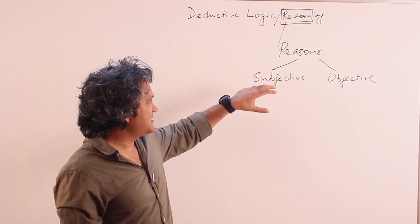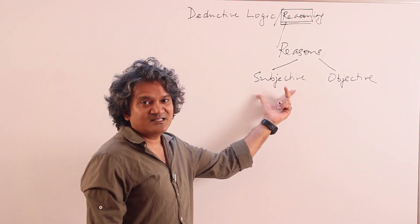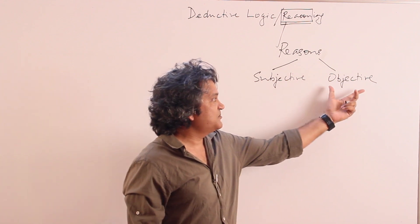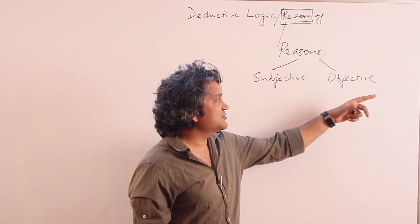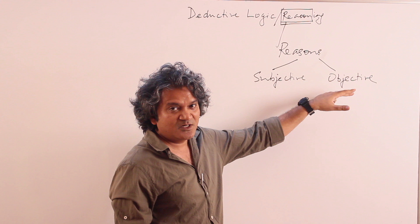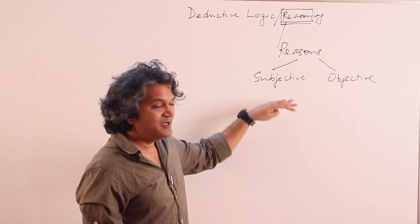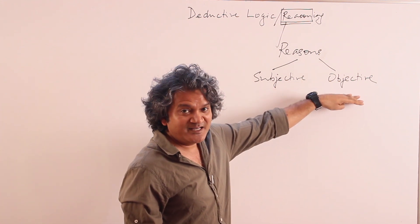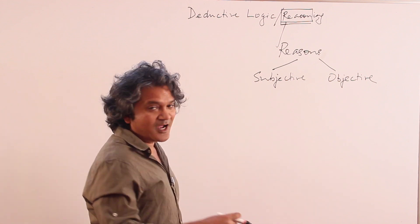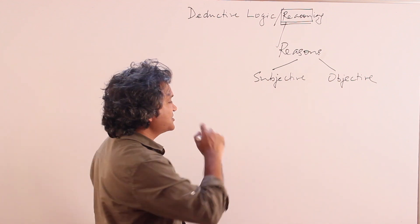And reasons can be objective. The difference is that subjective reasons depend on the subject, whereas objective reasons depend on the object. So they are independent of the subject. In other words they are independent of who is doing it. They are only dependent on the object of discussion.